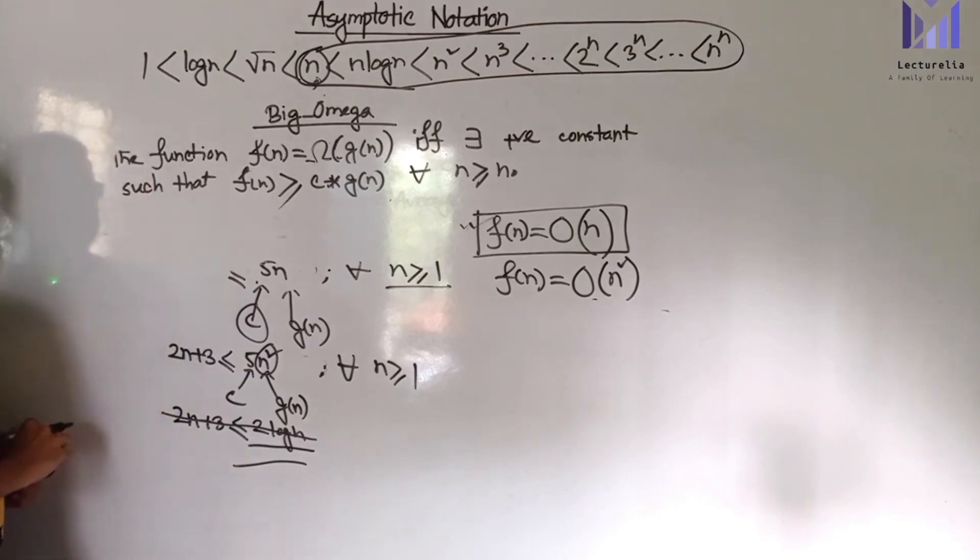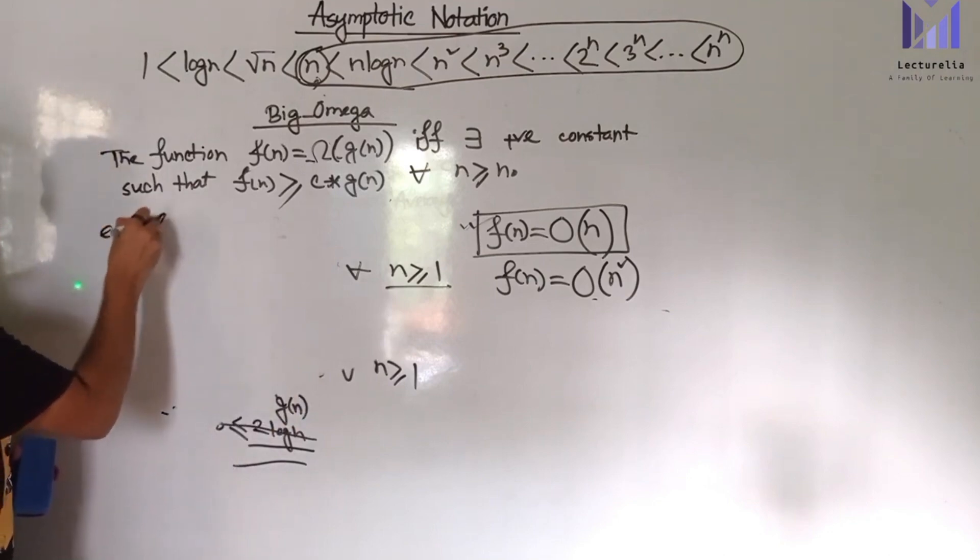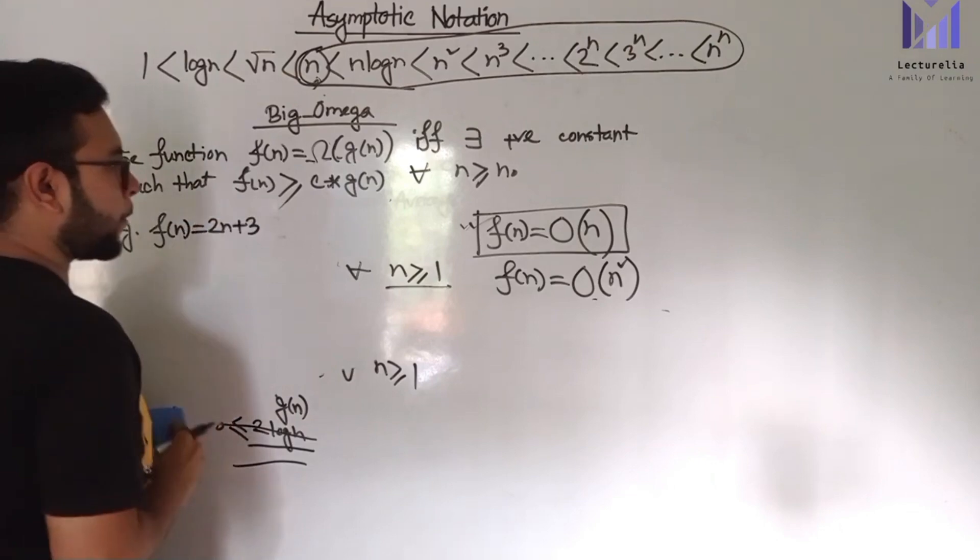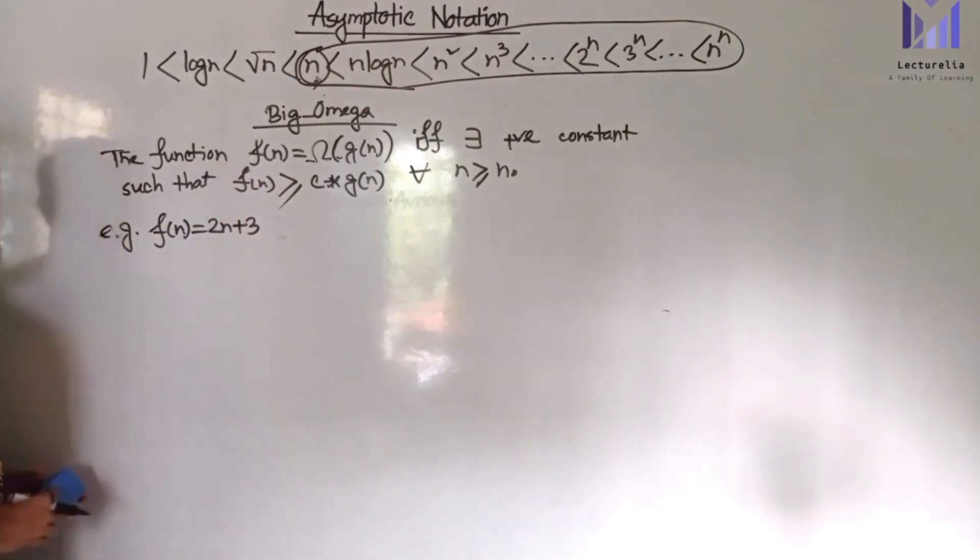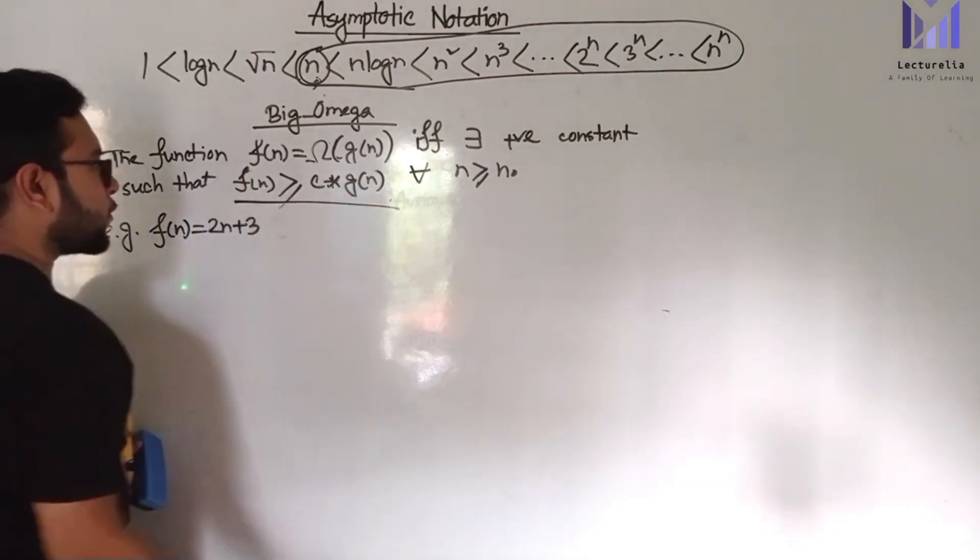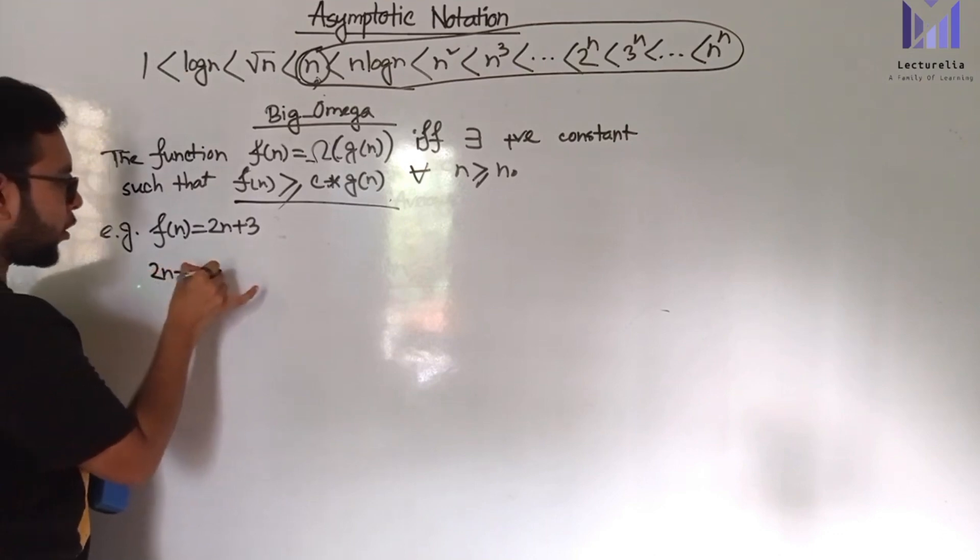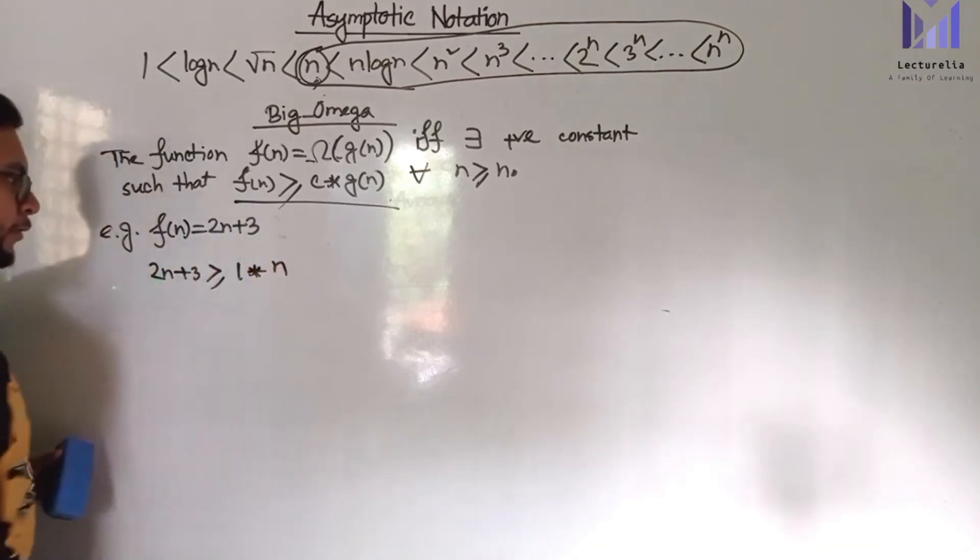Taking the same example as before: function of n equals 2n plus 3. From the condition, function of n is greater than or equal to c into g(n), so 2n plus 3 is greater than or equal to 1 into n.